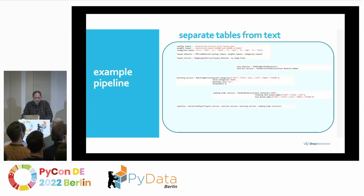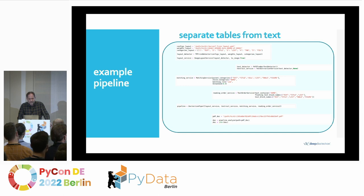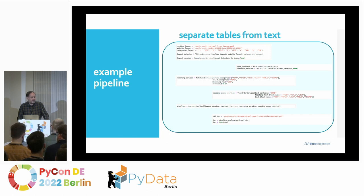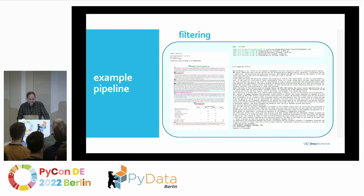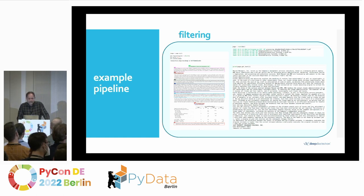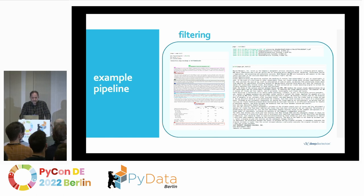You plug all these backbones into a pipeline. To run it, you just set a path to your document — which can contain several pages — and call the analyze method. This returns a generator from which you can iterate. For convenience, there is also an output parse structure available which gives you handy features like getting text based on a filter condition. In this particular use case, you can see on the right-hand side that it contains only the text without the table structure, which was intended from the beginning.